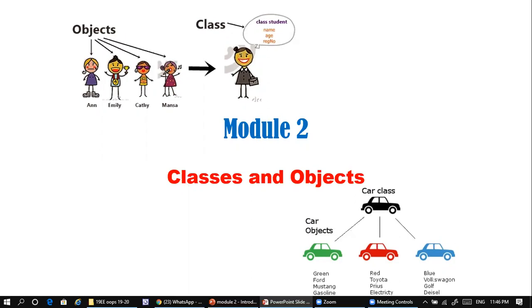Consider the diagram given here. The class is called 'student' — every student has some common attributes like a name, a number, and an age. But when you say an object, each student has special details. For example, this picture shows a student named Ann, who is female, of a particular age, with a separate USL number and belonging to a particular class.